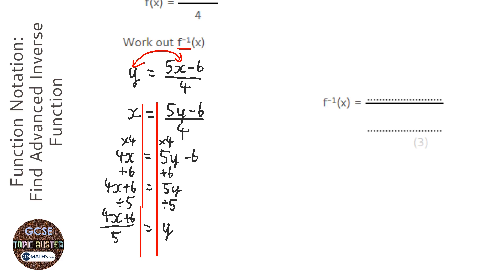Now we made up y, so we don't want y in our answer. So we have inverse function of f of x equals 4x plus 6 over 5.